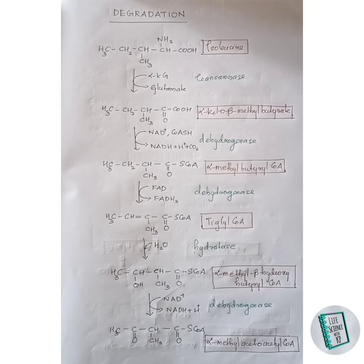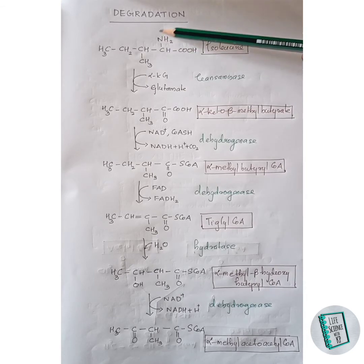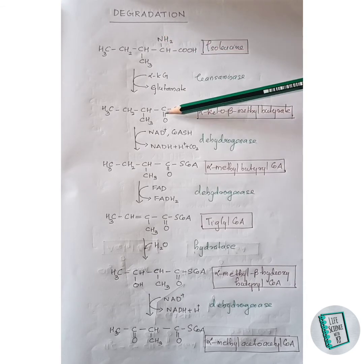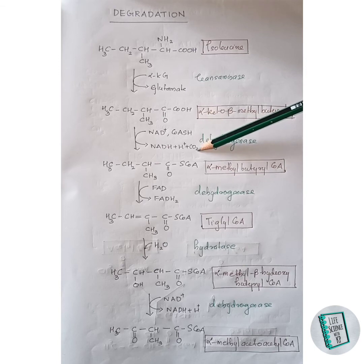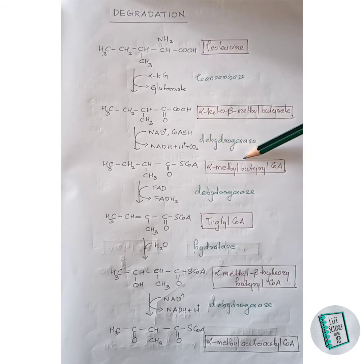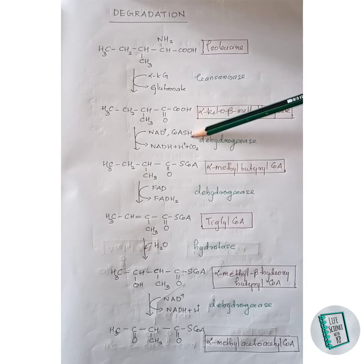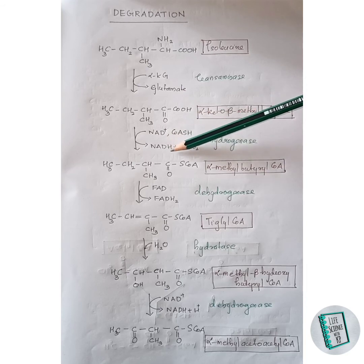Isoleucine degradation starts with a transamination reaction: the amino group of isoleucine gets replaced with a keto group, forming alpha-keto-beta-methyl butyrate. This compound then undergoes dehydrogenation and decarboxylation in the presence of dehydrogenase enzyme. The hydrogen from the carboxyl group and from CoASH are removed with NAD⁺ as NADH₂.